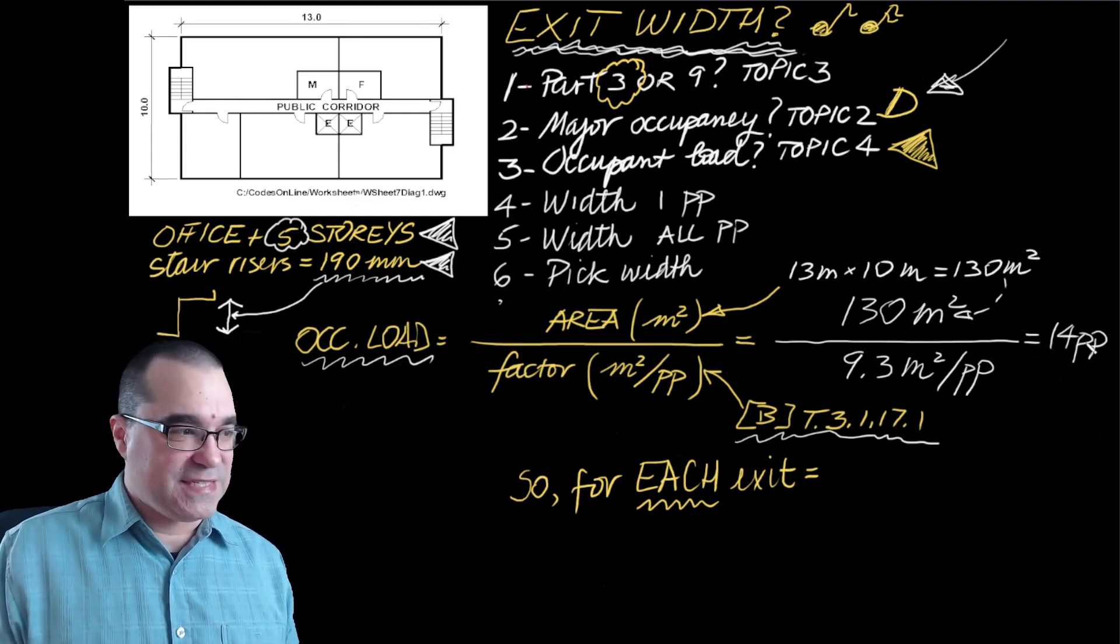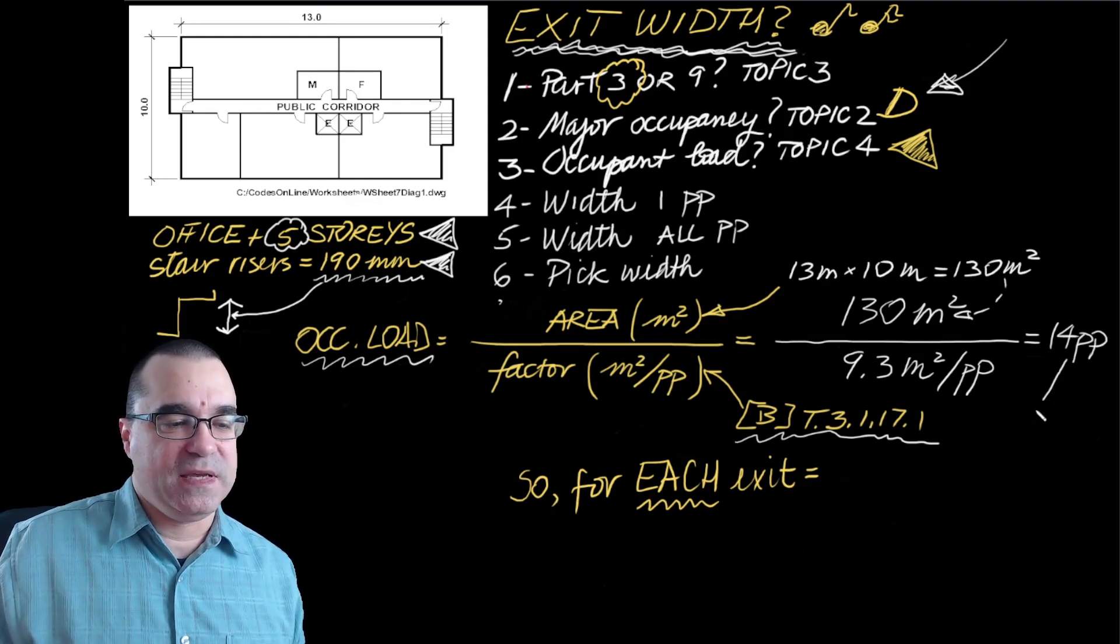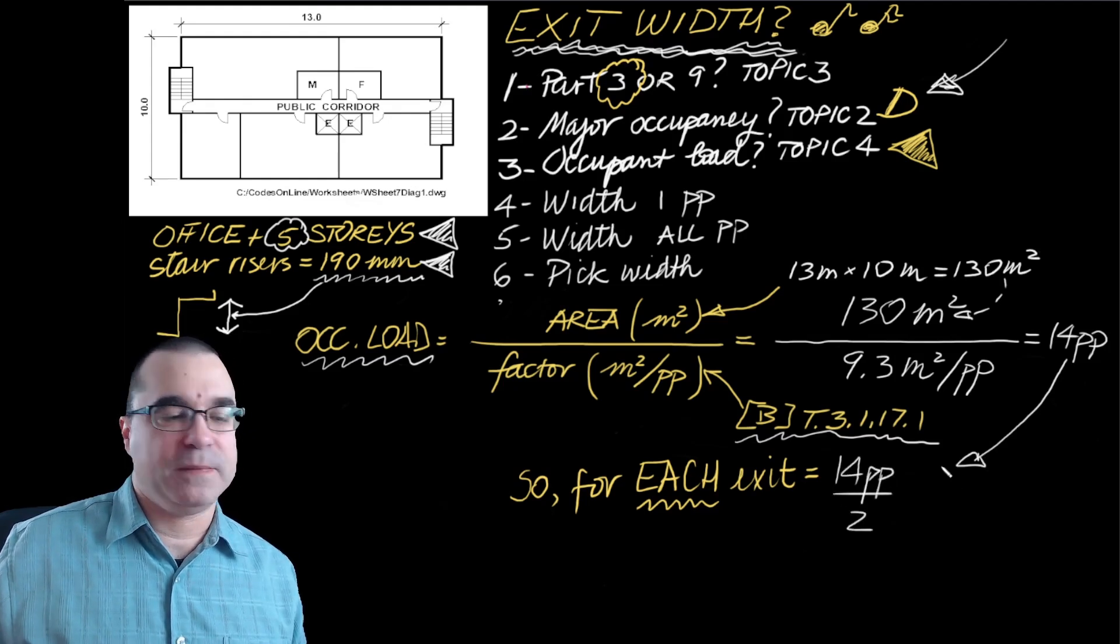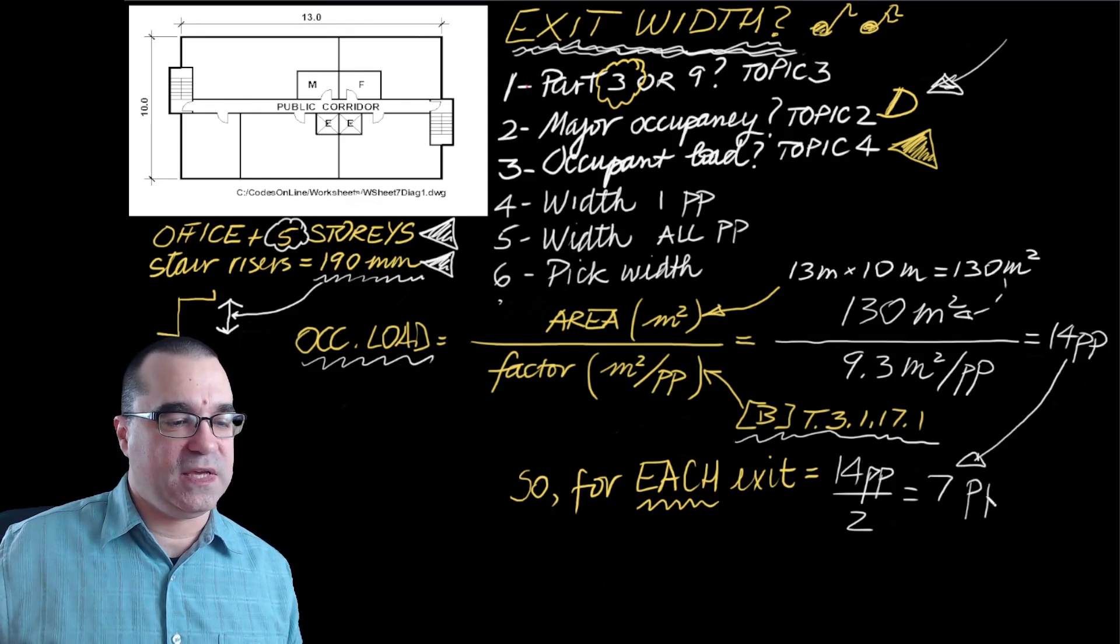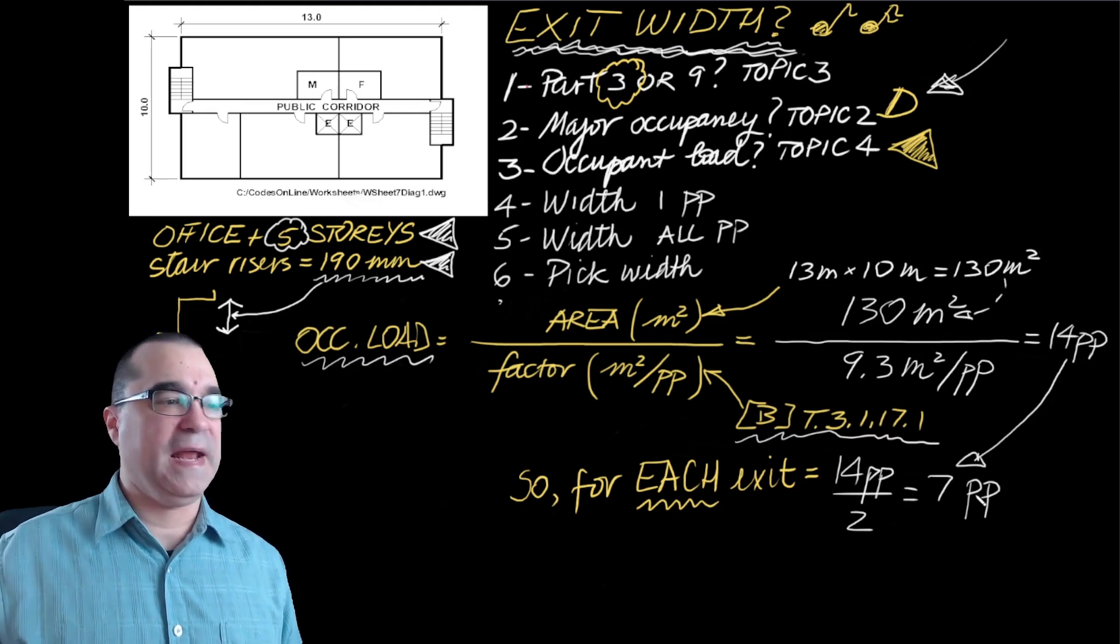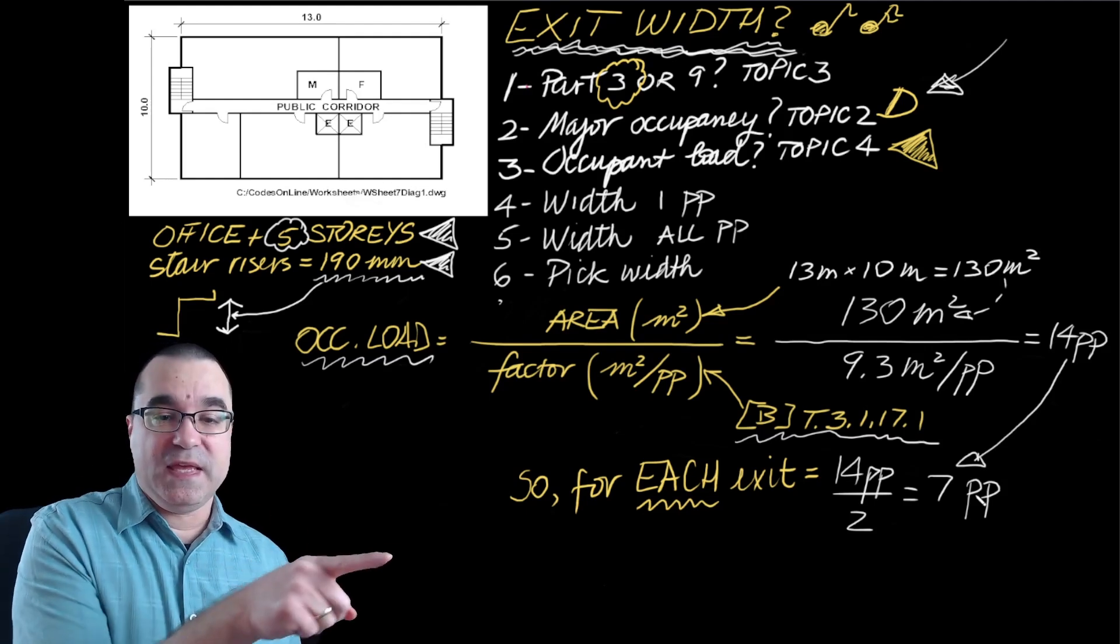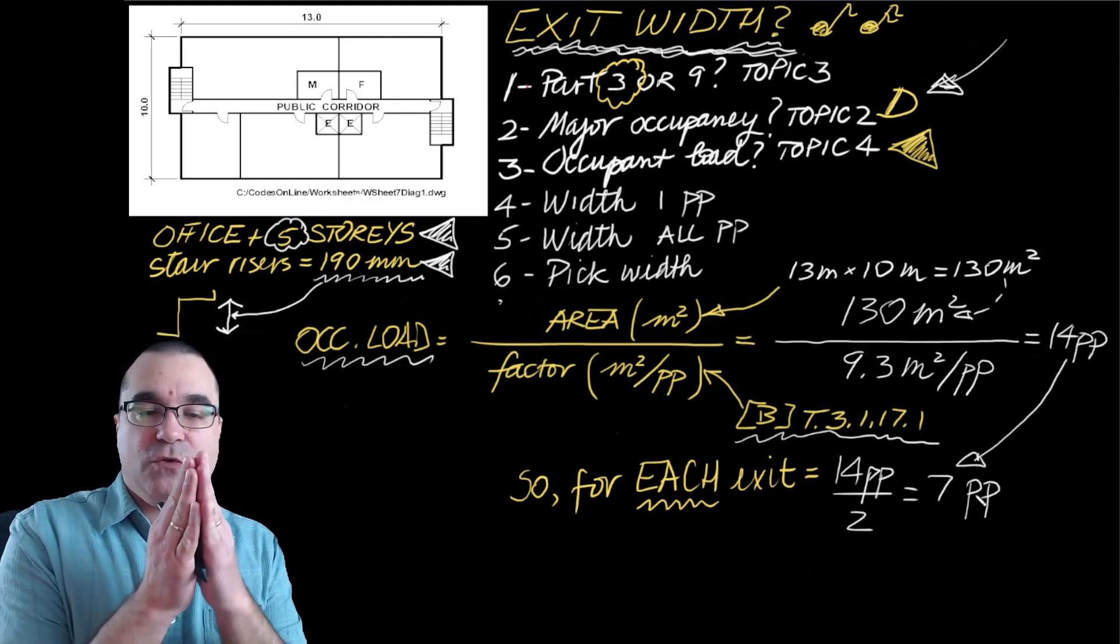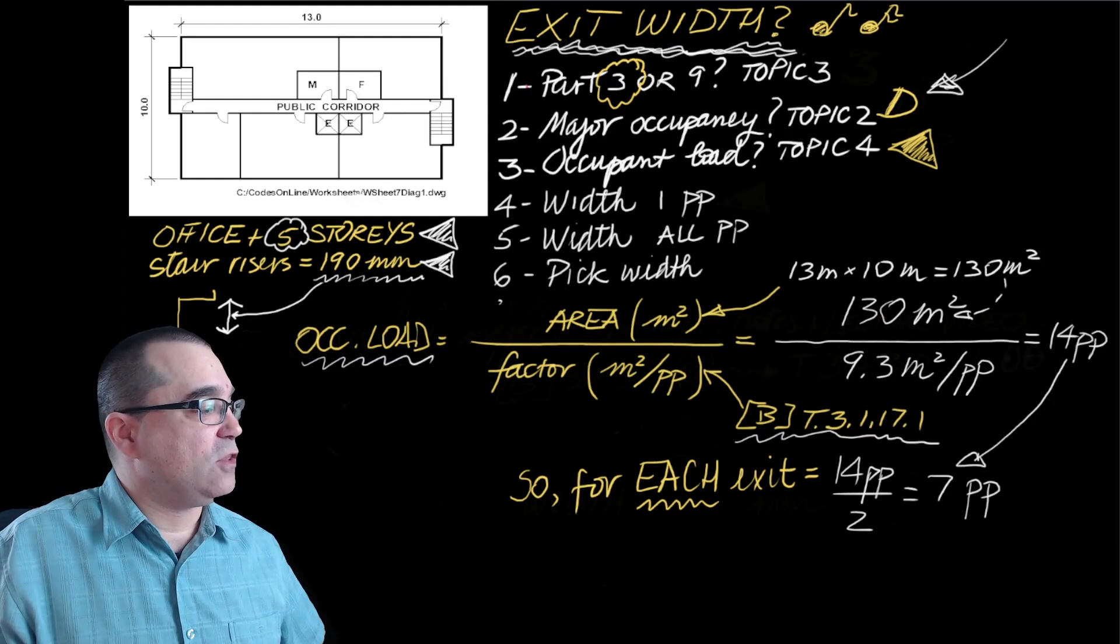So for each exit, because we have two exits, the assumption is that these folks, half of them go to one exit, half of them go to the other exit. So for each exit, we get seven people. Great. Now that we've figured out the occupant load for this space for each exit, we can move on to step number four, which is figuring out the width of the exit stairs so that one person can get through.